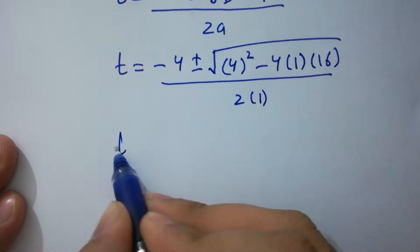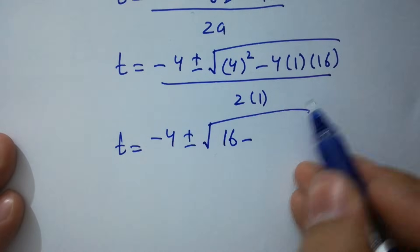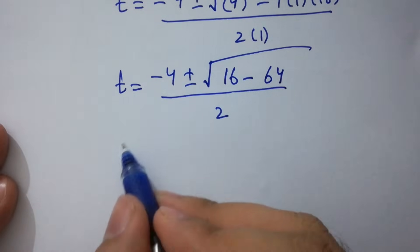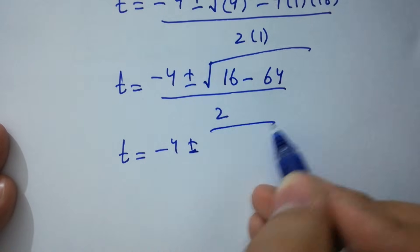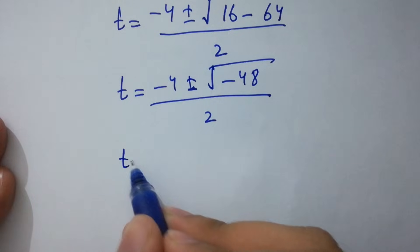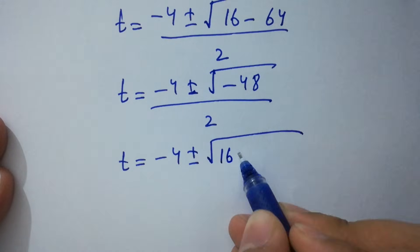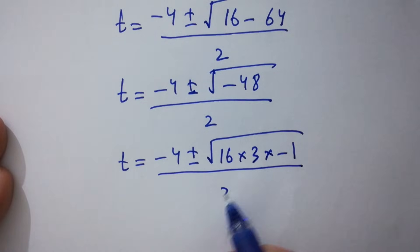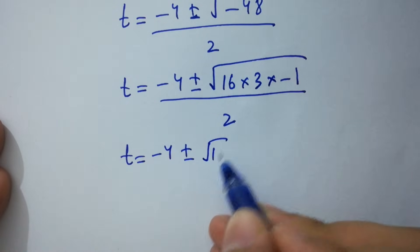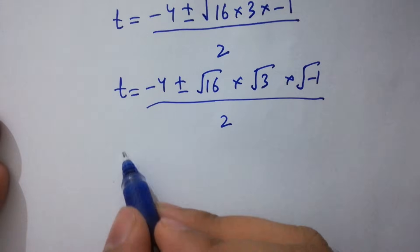Simplifying: t equals minus 4 plus or minus square root of 16 minus 64, over 2. That gives us minus 48 under the square root. We can write minus 48 as 16 times 3 times minus 1, over 2.